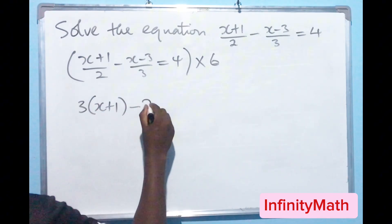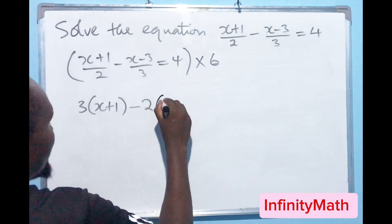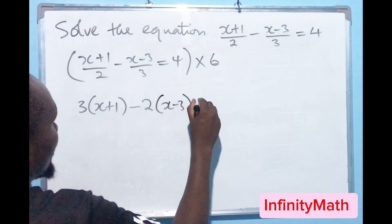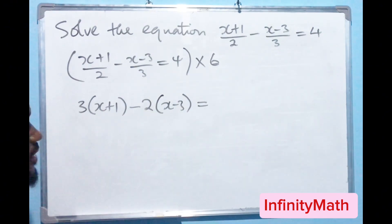Minus it's going to be 2 because 3 goes into the 6 two times. So it's going to be 2 multiplied by x minus 3, which will equal to 4 times 6. So 4 times 6 will give us 24.